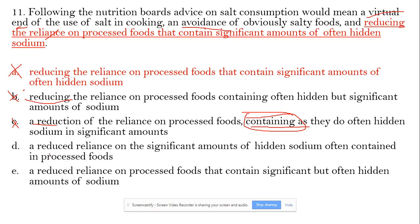Option D says 'a reduced reliance on the significant amount' — again incorrect, because it should be reliance on processed foods, not significant amount. So D is incorrect. E is the best choice.